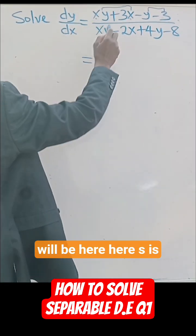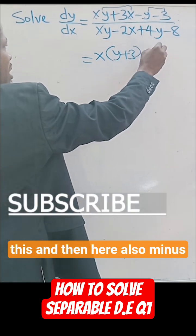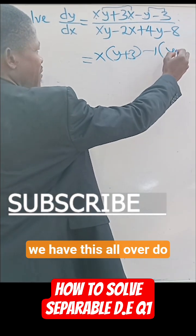And that will be here, here. X is common, take it out, we have this. And then here also, minus 1 is common, take it out, we have this.